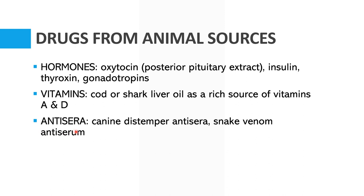We also have antisera, including canine distemper anti-serum and snake venom anti-serum. An anti-serum is a blood serum containing specific antibodies against an infective organism or poisonous substances. Anti-serums are produced in animals such as horses, sheep, ox, and rabbit, as well as in humans in response to infection, intoxication, or vaccination, and may be used to confer immunity or treat bites and stings of venomous animals.